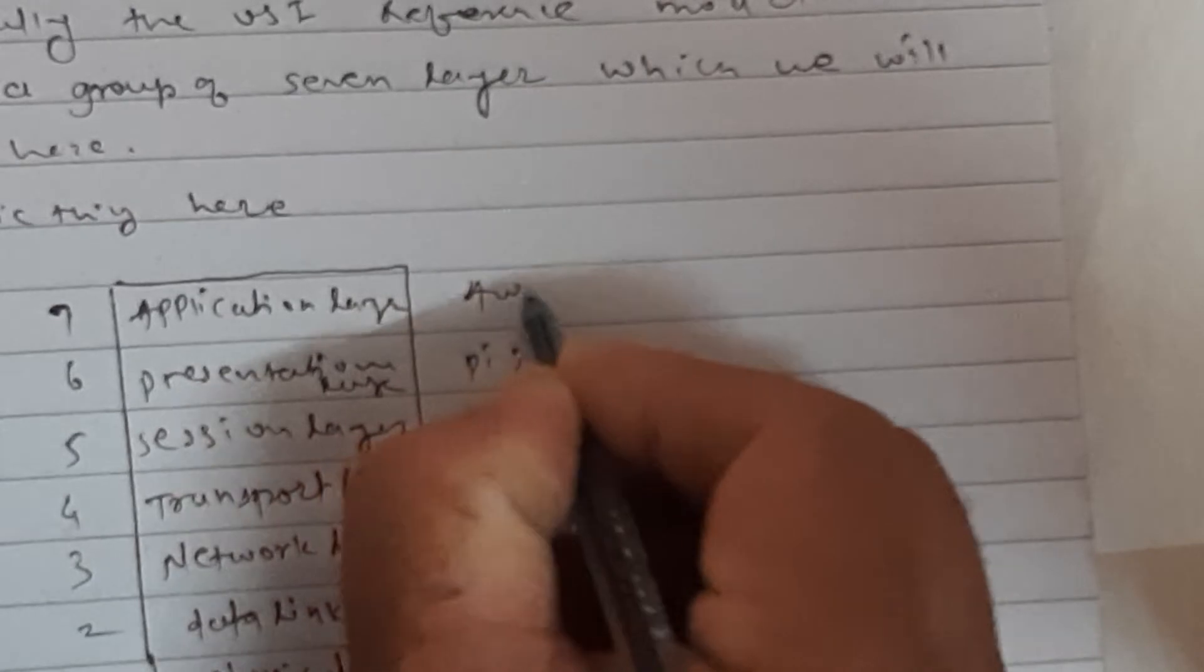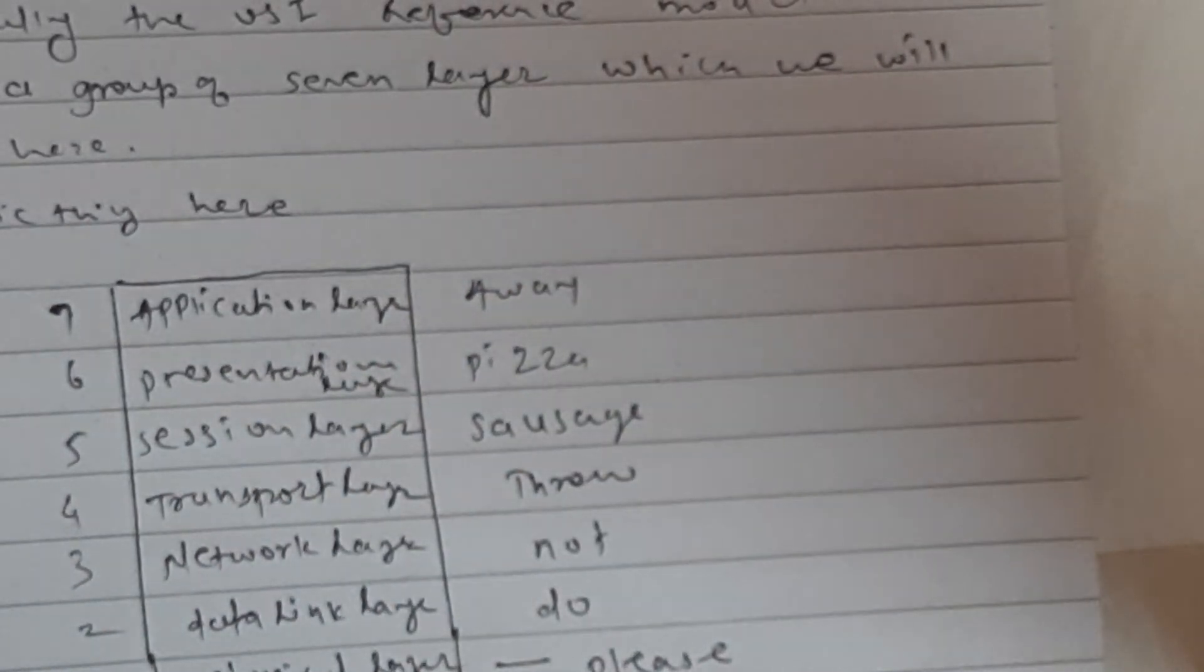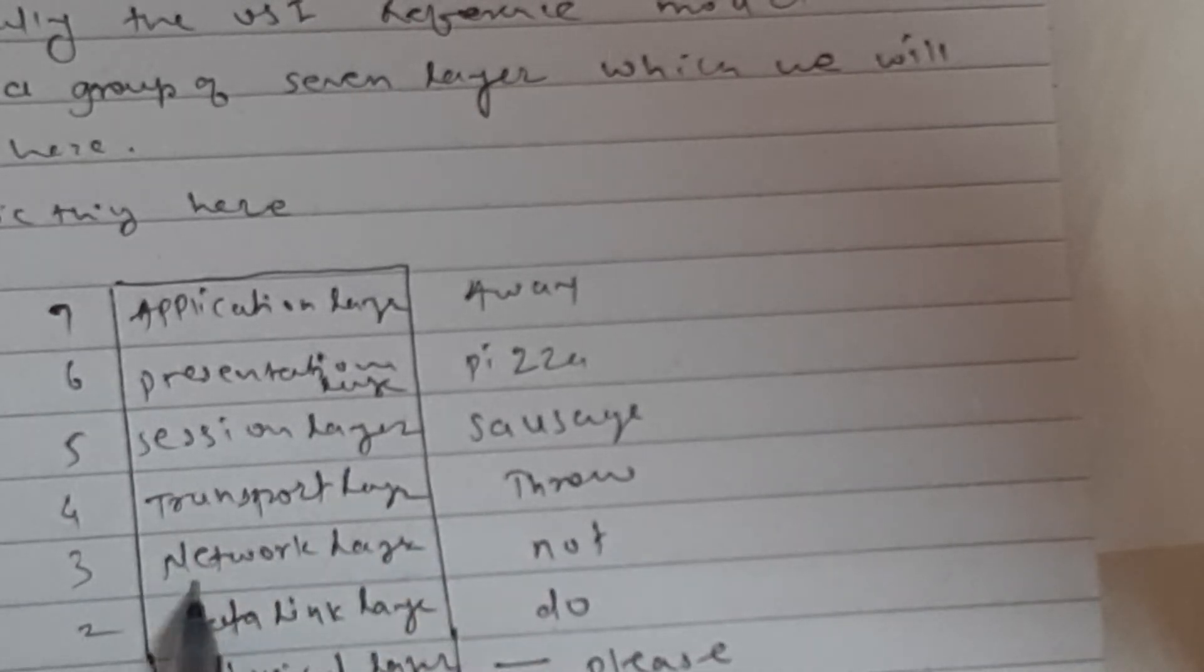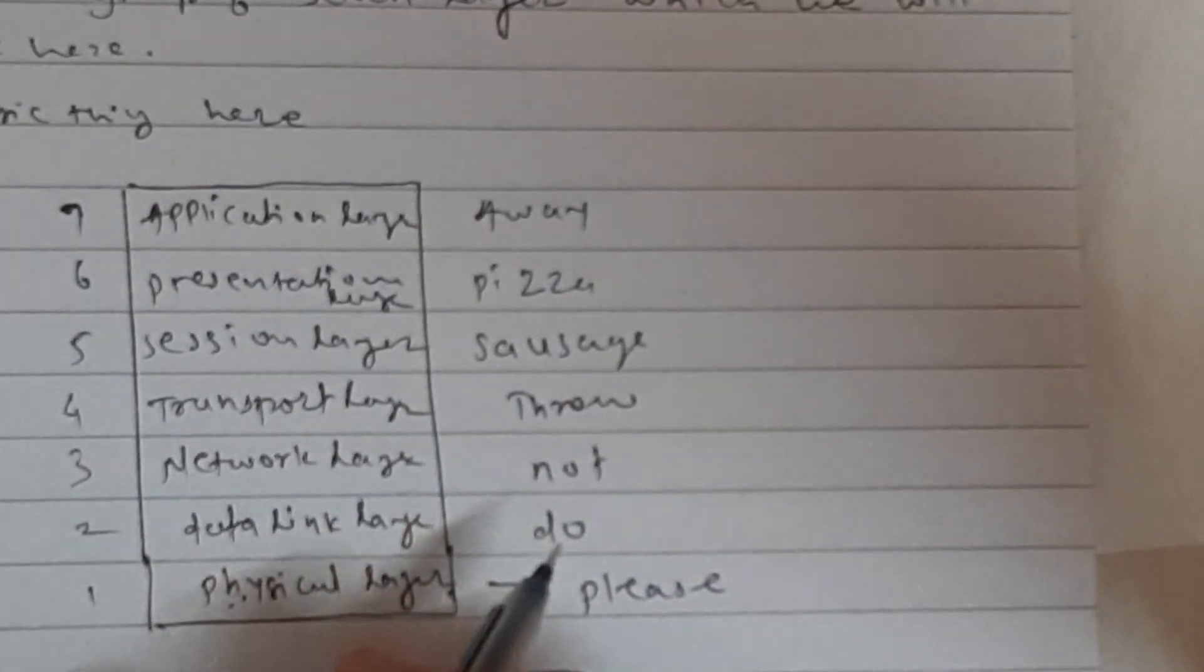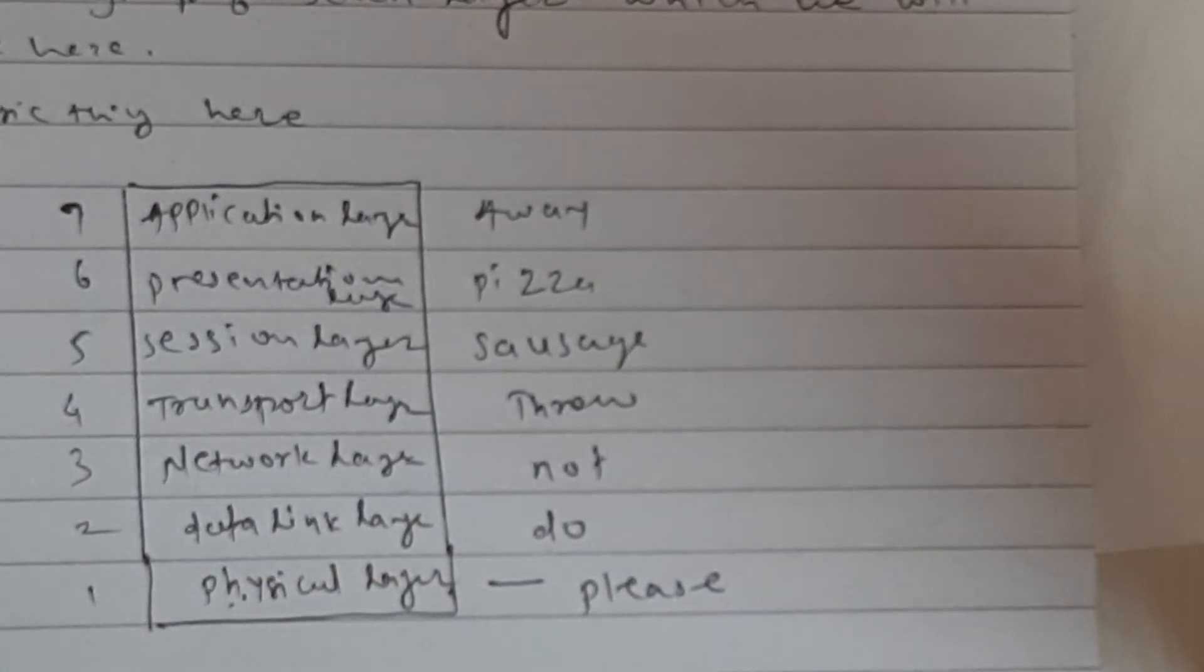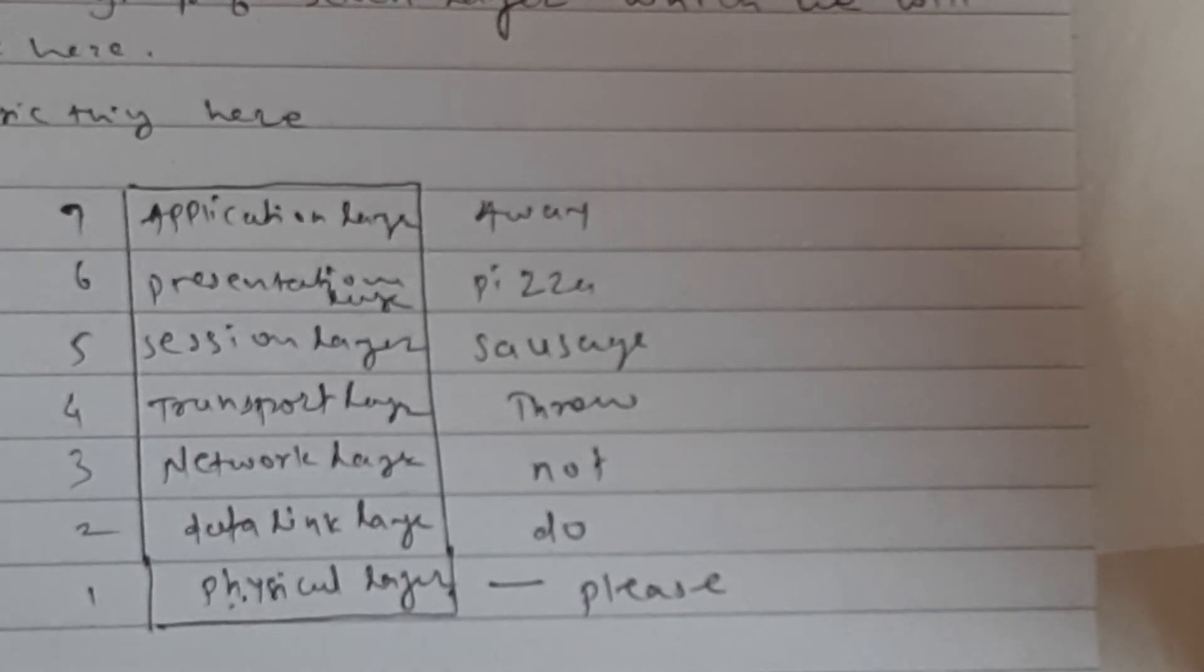Sauces Pizza Away. P stands for Physical, D stands for Data Link, N stands for Network, T stands for Transport, S stands for Session, P stands for Presentation layer again, and the last one A stands for Application layer. So this phrase helps you to remember these seven layers in detail.